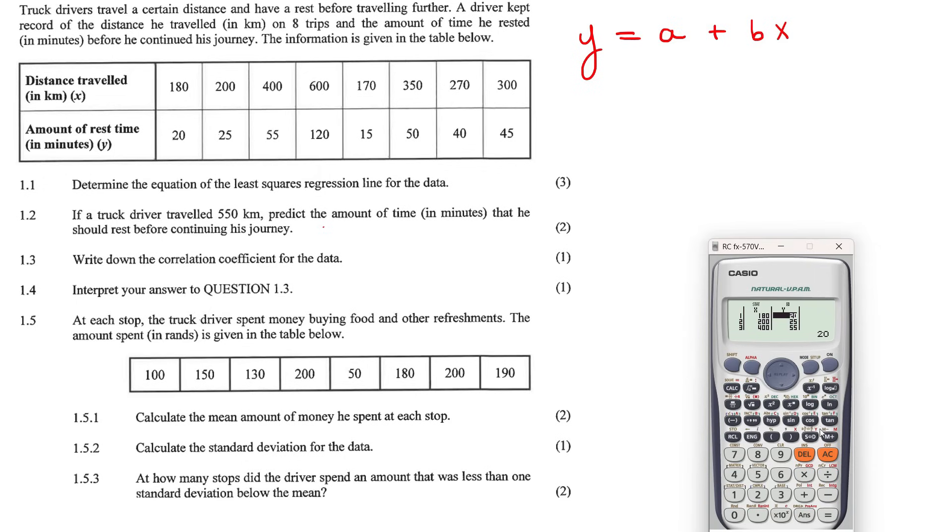Once all the data has been input, you can press the AC button, press shift, press the number one, then go to five, which stands for regression. And there we can get our A, B and R. So for A, you press one equals. We'll keep it to two decimal places. So minus 23.85. Then to get B, go shift one again, five, and then B, press equals 0.23.